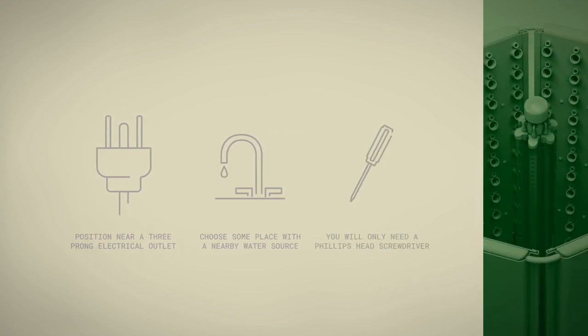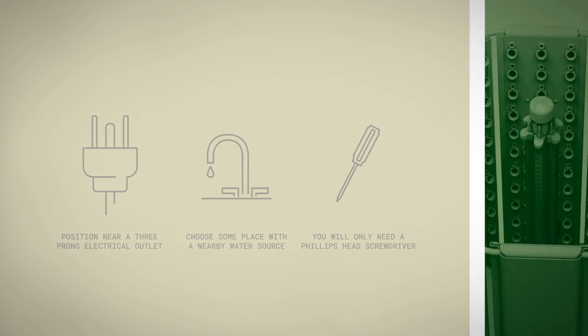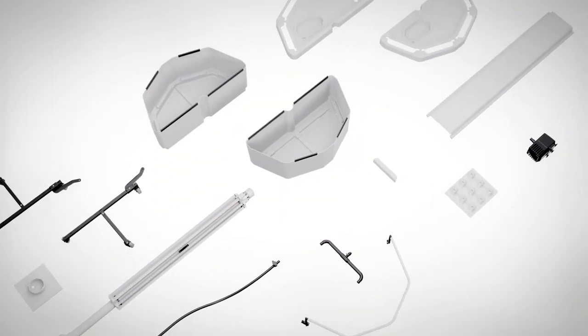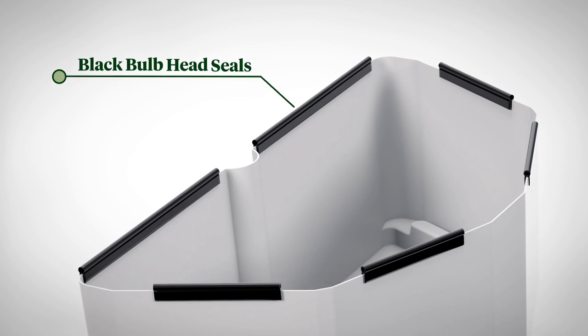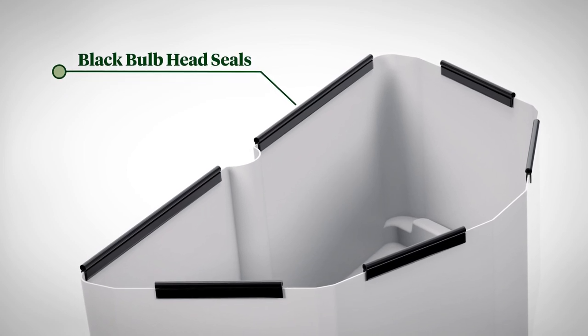For assembly you will only need a Phillips head screwdriver. We recommend unpacking both the FlexFarm boxes before you start. Please note the black bulb head seals on the tanks are not packaging and should remain on the tanks.